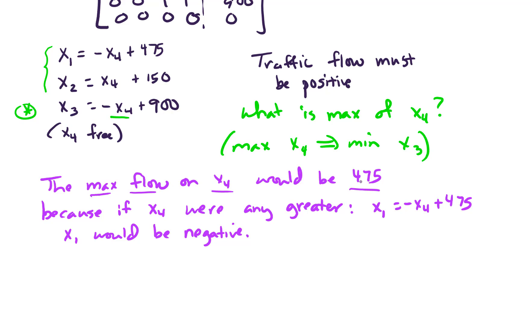That's important information. If X4 is 475, then the min flow on X3 turns out to be 425.